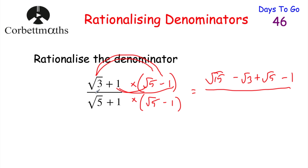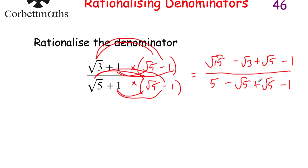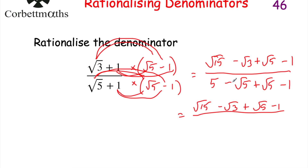For the denominator, (root 5 plus 1)(root 5 minus 1): root 5 times root 5 is 5; root 5 times minus 1 is minus root 5; 1 times root 5 is plus root 5; and 1 times minus 1 is minus 1. The minus root 5 and plus root 5 cancel to zero, leaving 5 minus 1, which is 4. So the final answer is (root 15 minus root 3 plus root 5 minus 1) over 4, and we've rationalized the denominator.